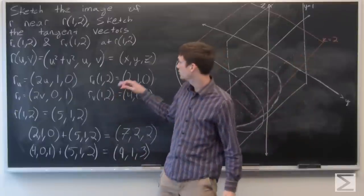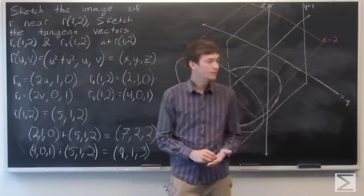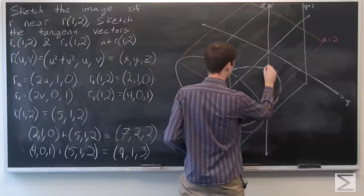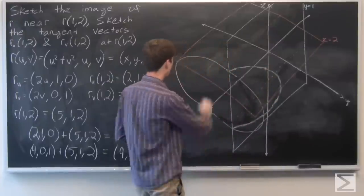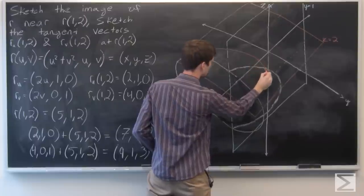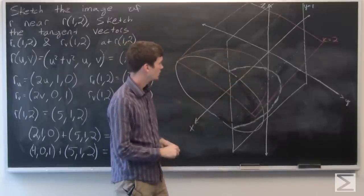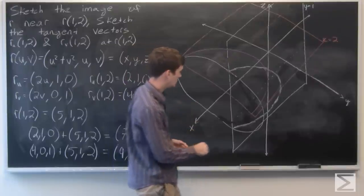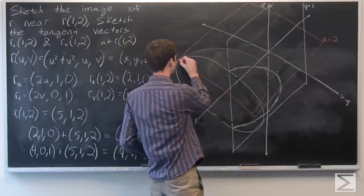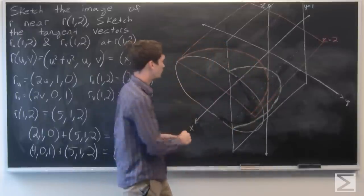But similarly, if we let z equal 2, we see that v is 2, and we get x equals y squared plus 4. So we're going to get a parabola that's on the plane where z equals 2. It's kind of hard to see maybe, but essentially we have a parabola here and a parabola here.